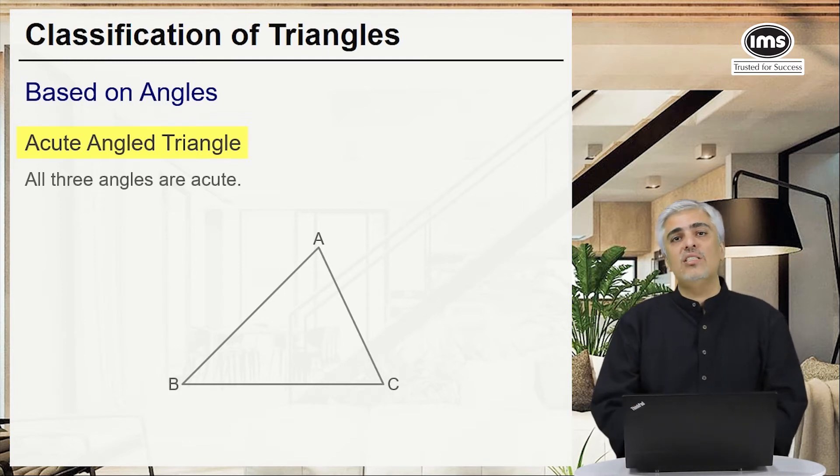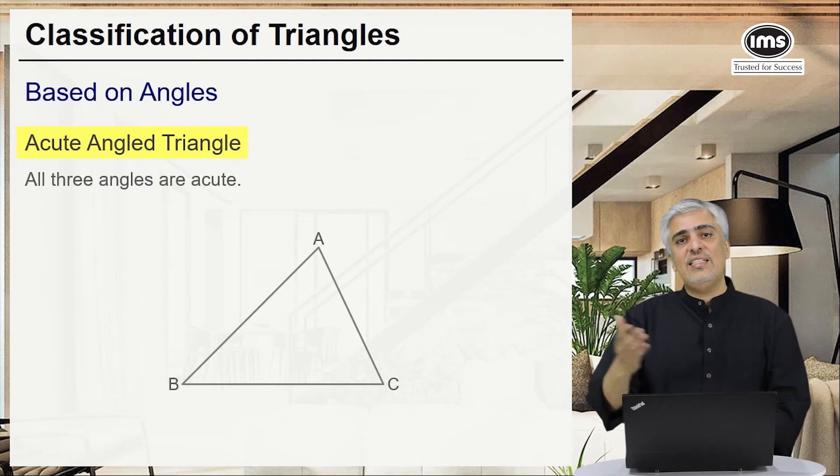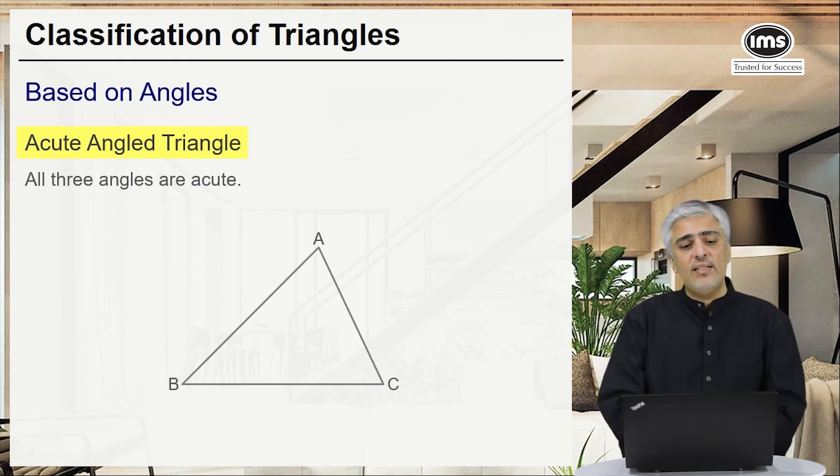We know that since the total is 180, 60, 60, 60 would be an acute angle triangle. It could also be 50, 50, and 80—still an acute angle triangle, and so on.